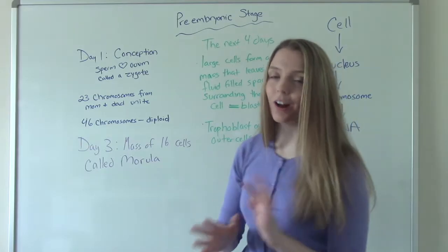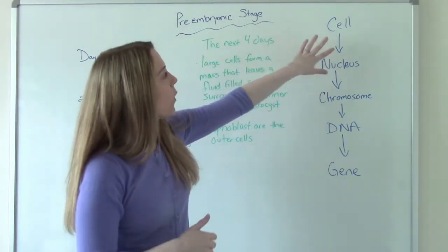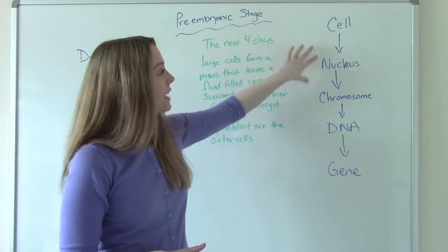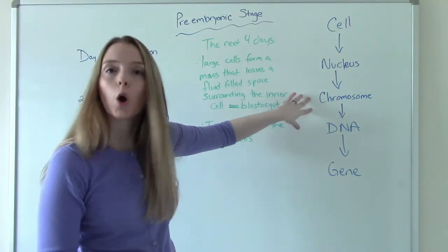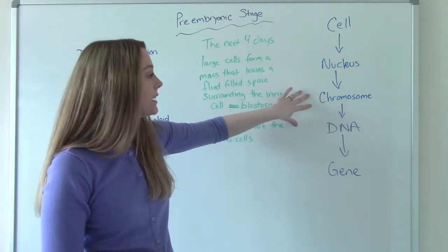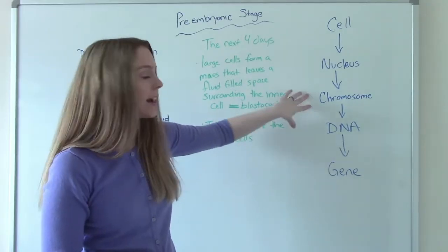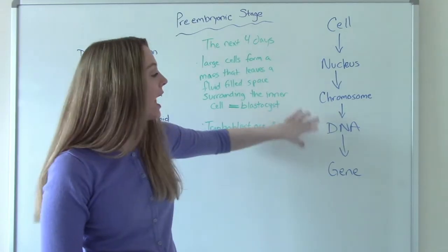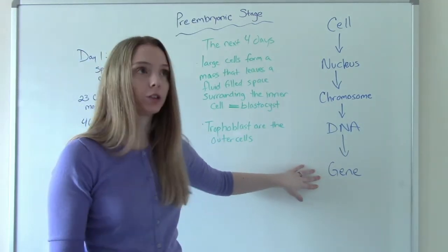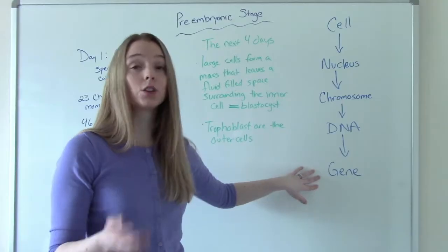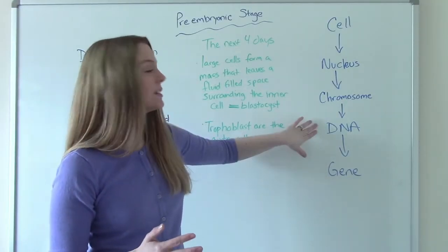If you don't remember all of that, I did a little chart here. So we have our cell, which has a nucleus. Inside the nucleus contains chromosomes. DNA contains chromosomes — DNAs are segments of chromosomes. And then finally, genes control heredity: our traits, like if you're going to be tall, short, red hair — those are segments of DNA.